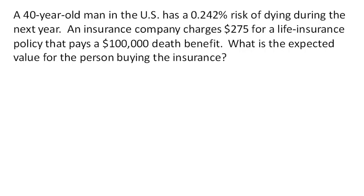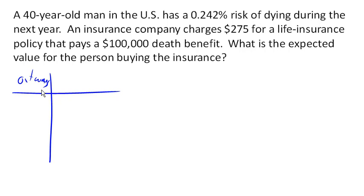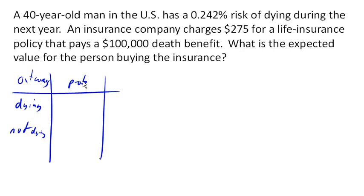There are two possible outcomes. Outcome number one is dying, and outcome number two is not dying. Each has an associated probability. The probability of dying is 0.00242, and the probability of not dying is the complement of that — 0.99758 — which is one minus the probability of dying.